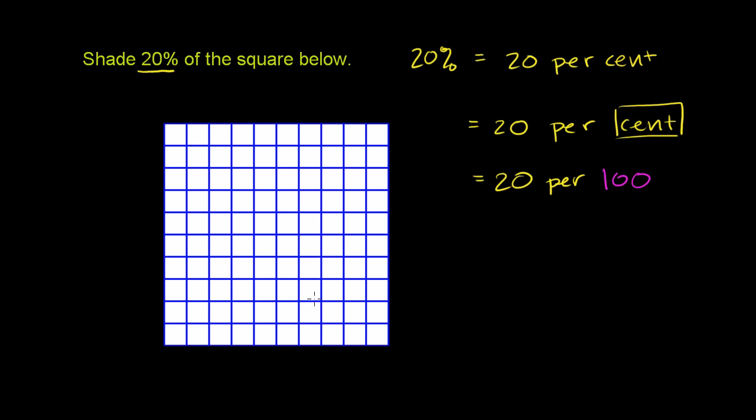So how many squares have they drawn here? Let's see. If we go horizontally, we have 1, 2, 3, 4, 5, 6, 7, 8, 9, 10 squares.